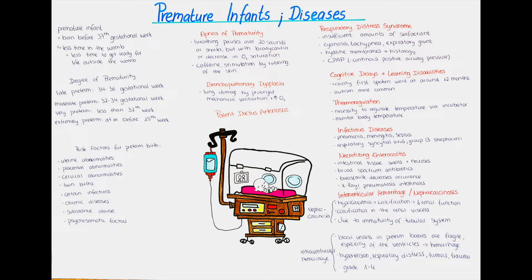Examples that might require medical induction of labor include certain conditions the fetus can develop, like fetal distress syndrome. The mom might have abnormalities with the placenta, like placental abruption. There might be ischemic placental disease, or the mother might have preeclampsia.